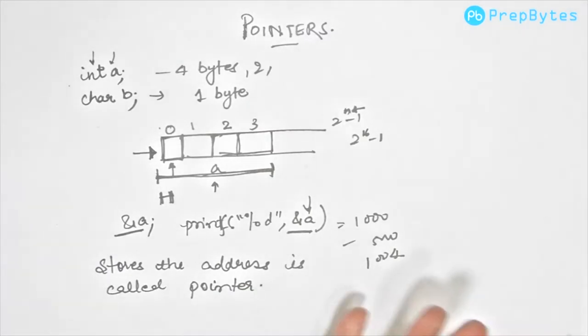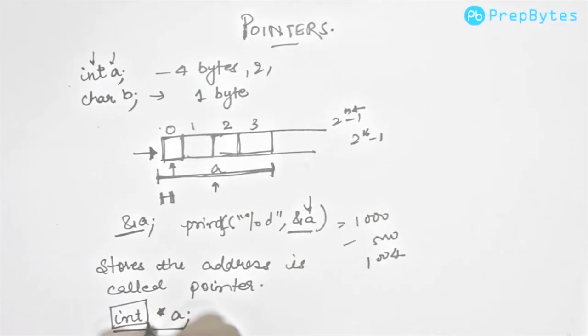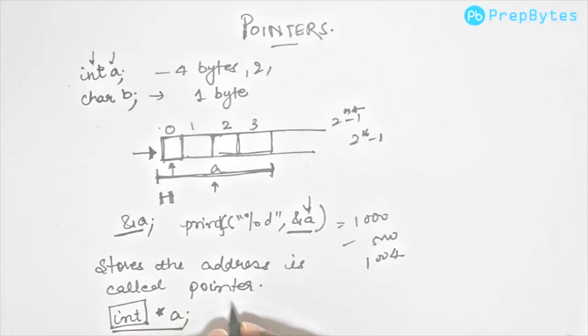How do we declare a pointer? We declare a pointer using star or asterisk. So this is a pointer to an integer. What does the data type of integer signify? It signifies that it is storing address of an integer variable. We will discuss further why this data type is really important.